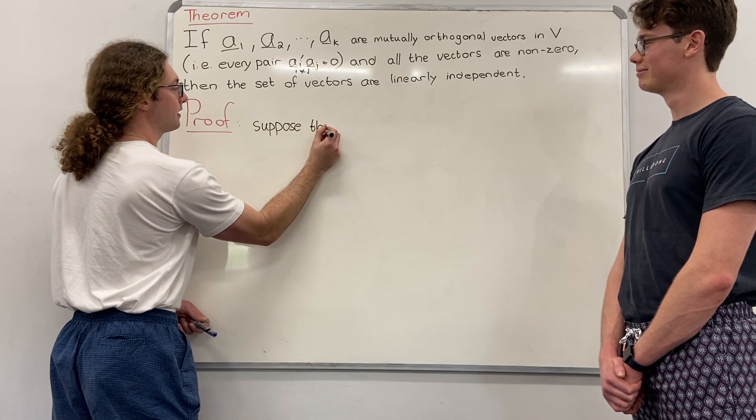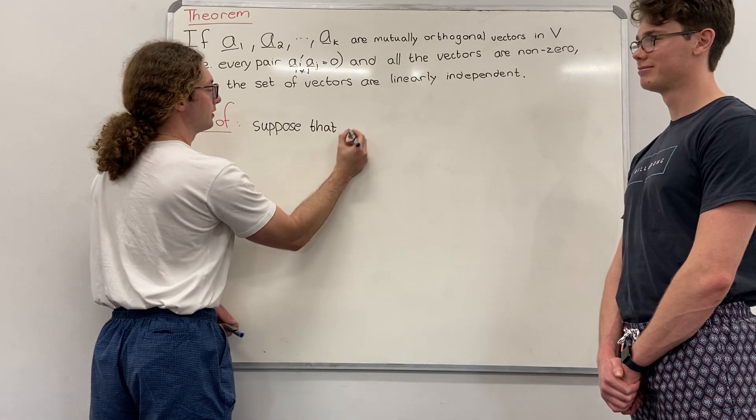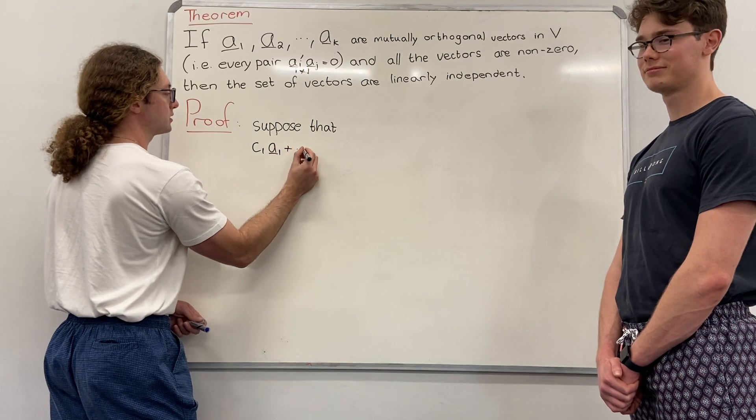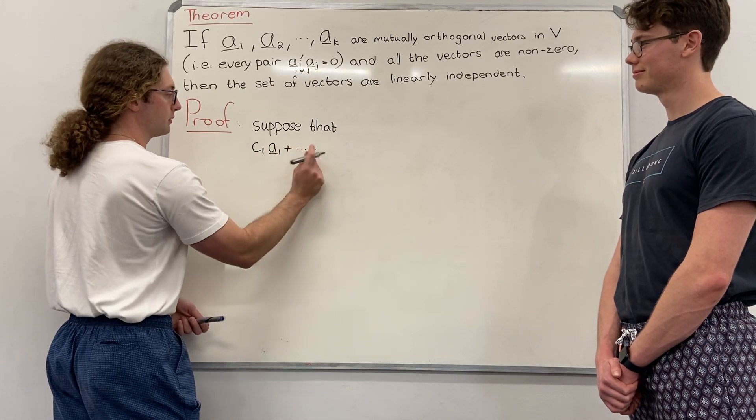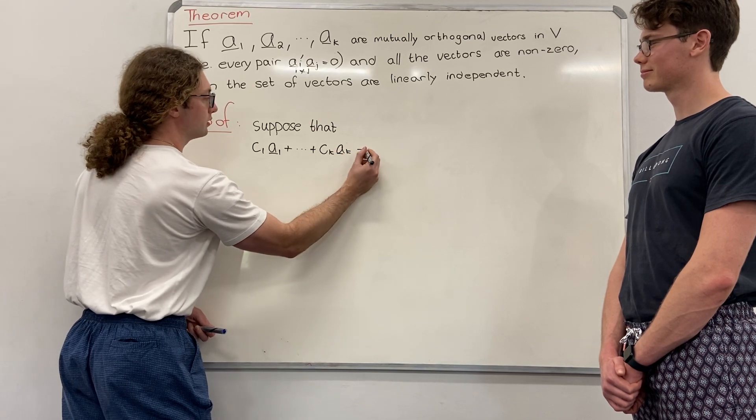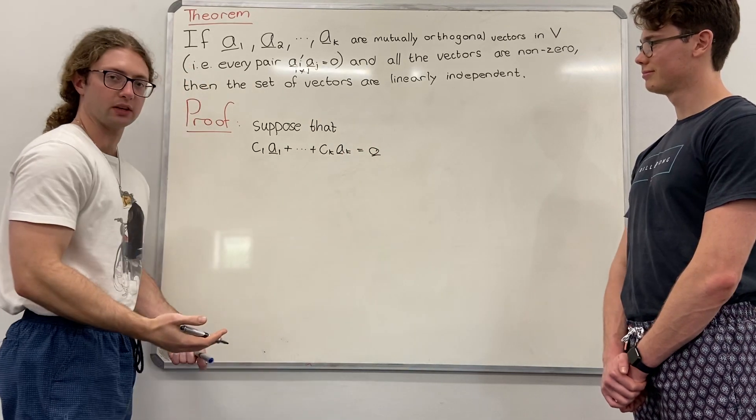Suppose that C_1 A_1 plus all of them through C_k A_k is equal to the 0 vector.